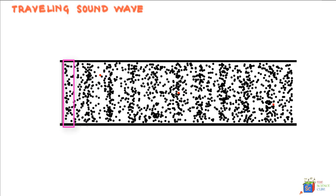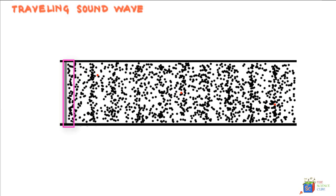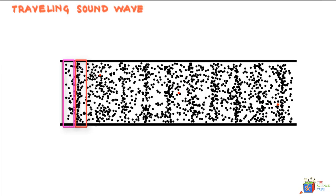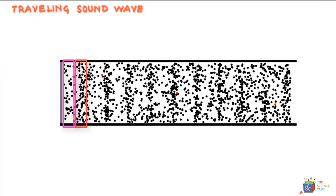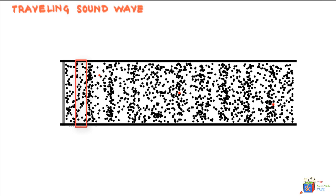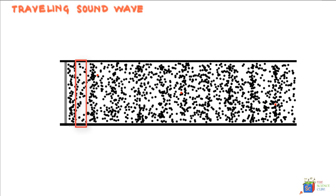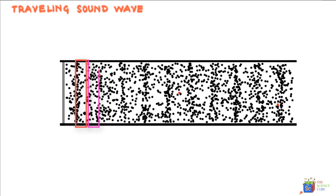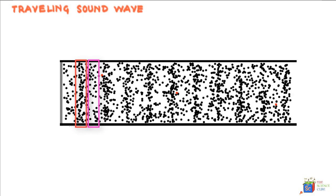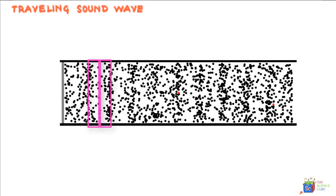They in turn collide with the particles that are adjacent to them, causing compression of this new set of particles. And I think you would have guessed that these particles push the next set of particles adjacent to them. And this keeps recurring for all particles ahead.